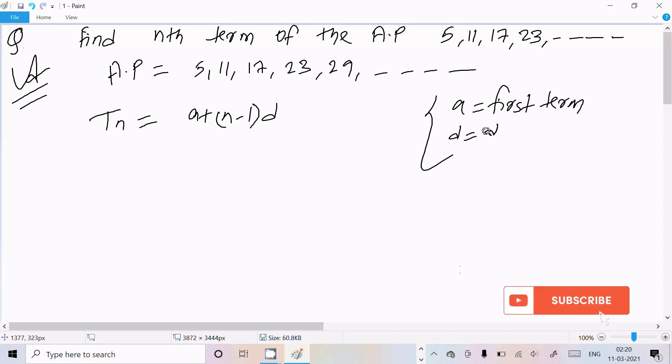d is the difference between two terms—difference like n2 minus n1, n3 minus n2, whatever. So here, a value is 5. d is... so this is n1...